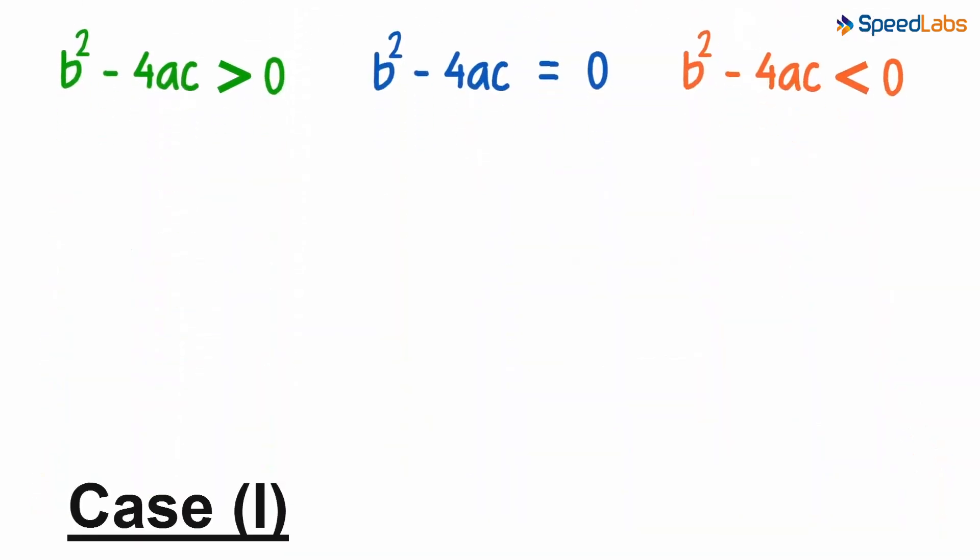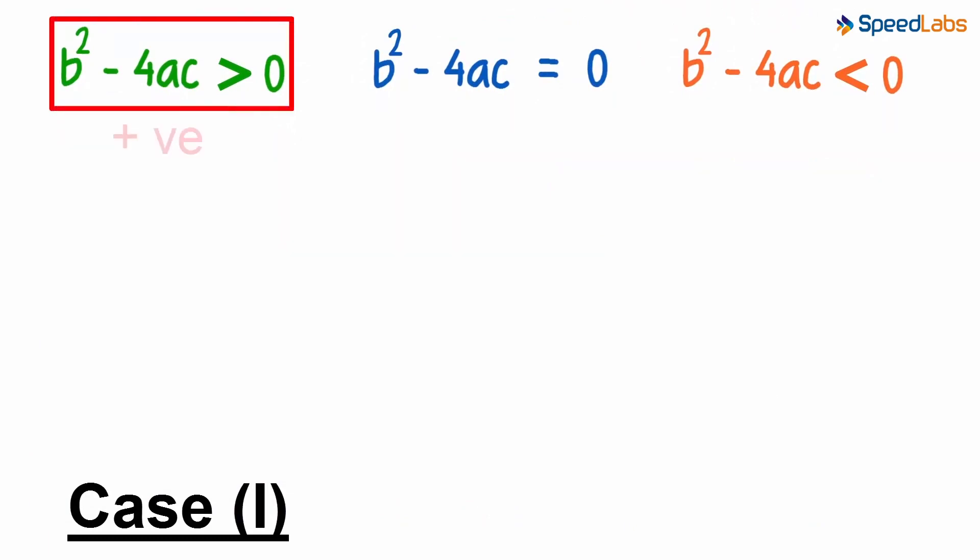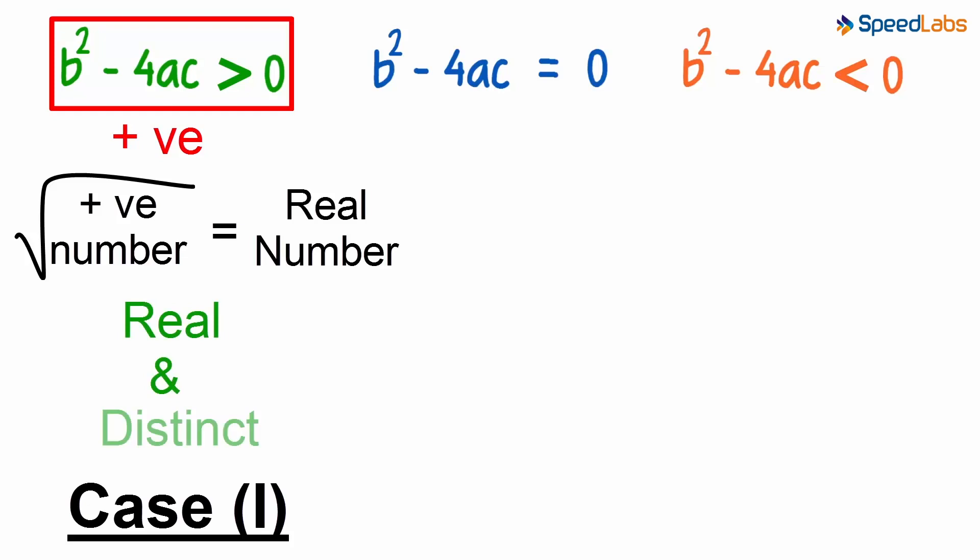What happens in the first case? As the value is positive, the square root of the value will result in a real number. And it means that both the roots will be real. And they will be distinct too.